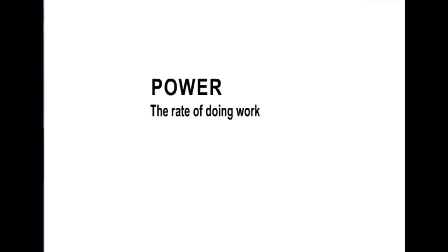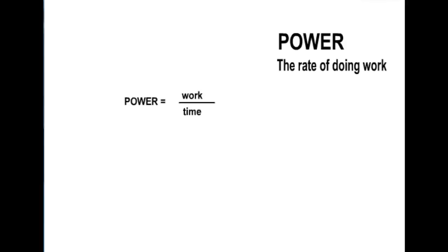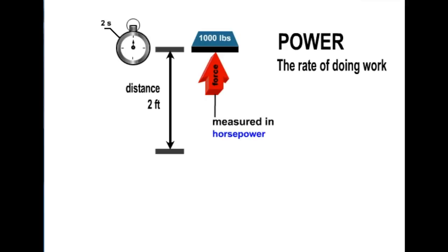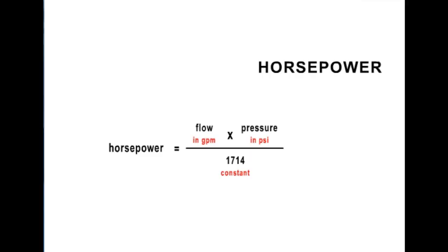Power may be defined as the rate of doing work, or work over time in seconds. If we lift 1,000 pounds 2 feet in 2 seconds, we have accomplished 1,000 units of power, or 1,000 times 2 divided by 2 seconds. To give us relative meaning for measuring power, we must convert this to horsepower, which is a unit of measuring energy. Mathematically, hydraulic horsepower is expressed as follows. Horsepower equals flow in gallons per minute times pressure in pounds per square inch divided by 1,714, a constant.